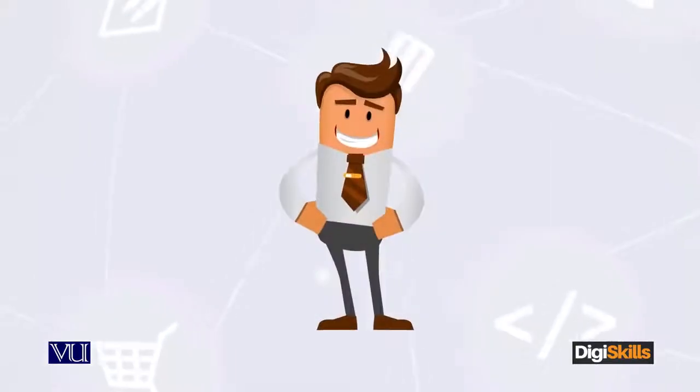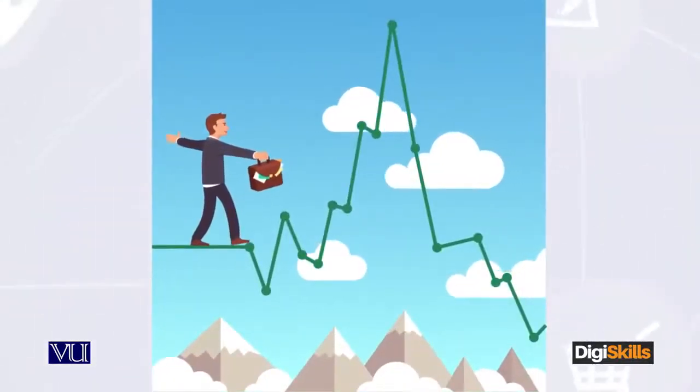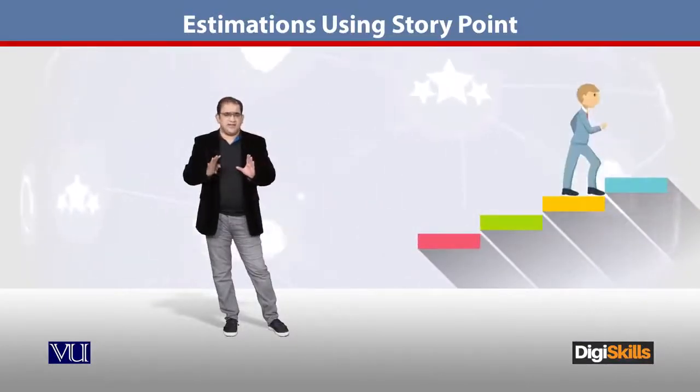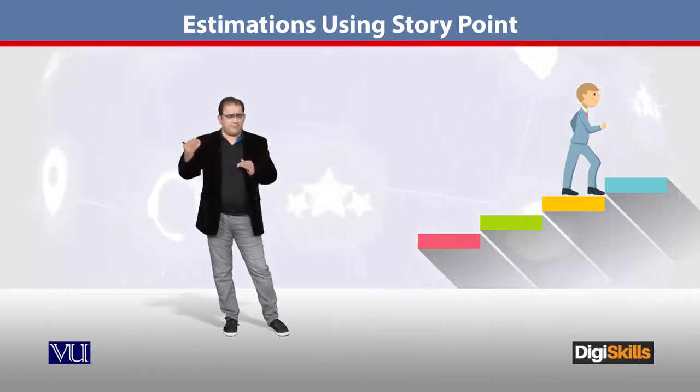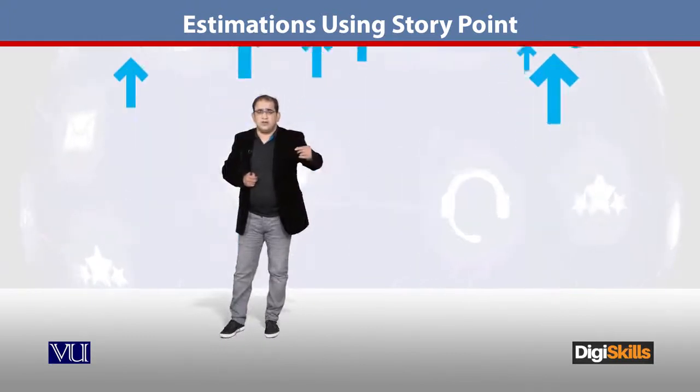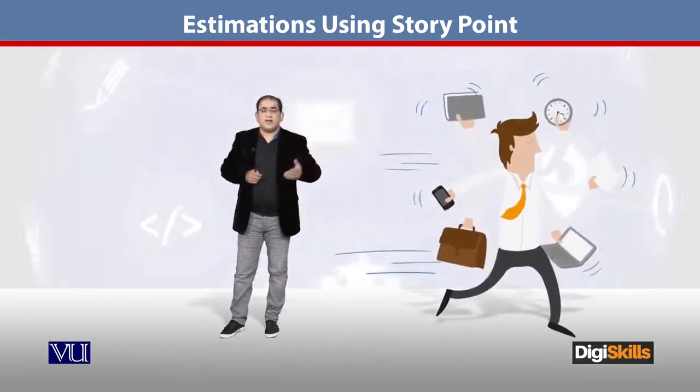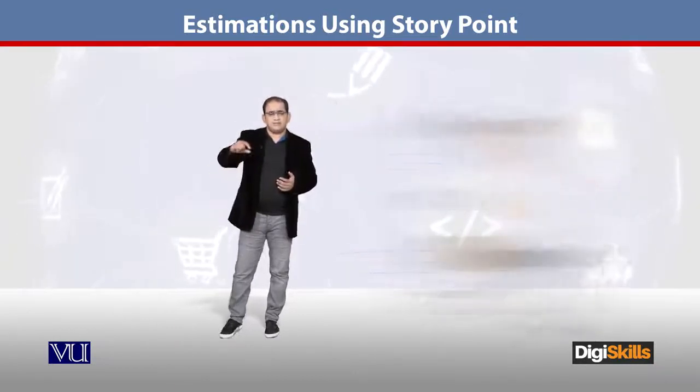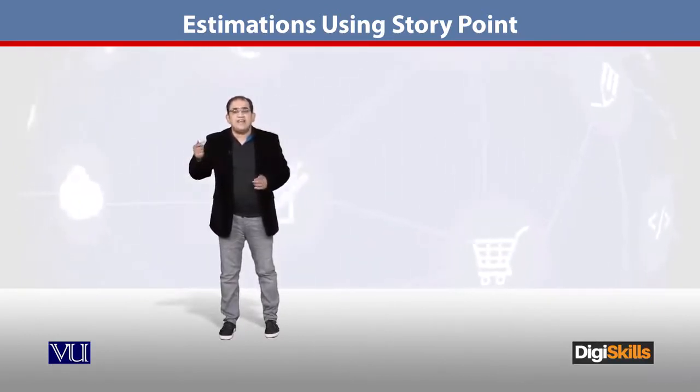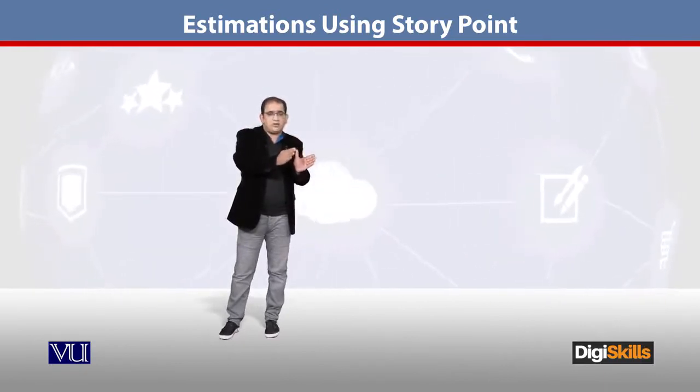For example, अगर आपने किसी story को story point 1 assign कर दी है, तो इसका मतलब है इसकी complexity बहुत कम है। Complexity का मतलब है कि आपको task समझ आ गई है, risk पता है, कुछ gray areas नहीं हैं। जैसे कि आपको एक user story को complete करने के लिए चार steps करने थे, और आप कहते हैं कि इसका story point 1 है, इसका मतलब है आपको 4 में से 3 steps clear हैं। जब story point increase होता है, तो complexity increase होती है।